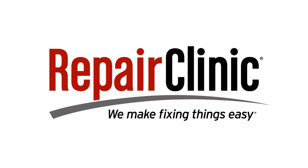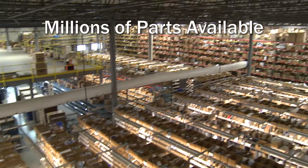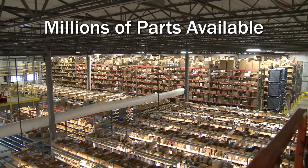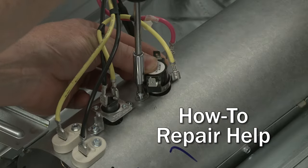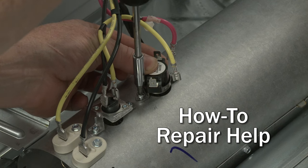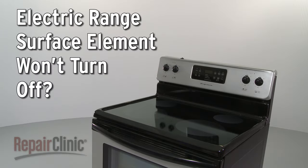Repair Clinic makes fixing things easy, with millions of replacement parts available on our website and the help you need to do the repair yourself. If a surface element on your electric range won't turn off, here are the two most probable causes.